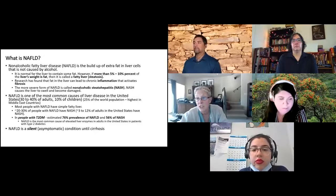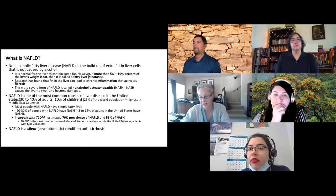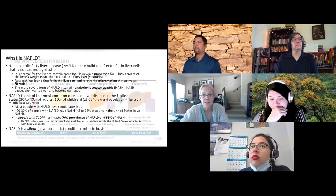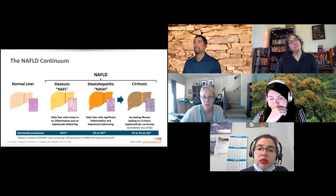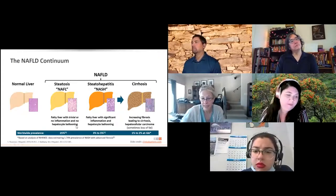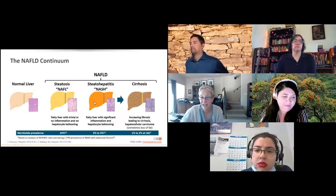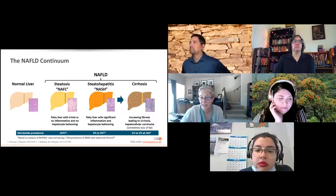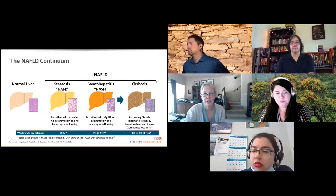If you see a patient with diabetes with elevated liver enzymes, the most common cause is NAFLD. It doesn't usually show up with symptoms, so it's considered silent until they get to liver failure or cirrhosis. The normal liver moves to all fat in the liver with no inflammation, no cell damage, then into NASH with cell damage, and finally scar tissue or fibrosis — that's the natural continuum.